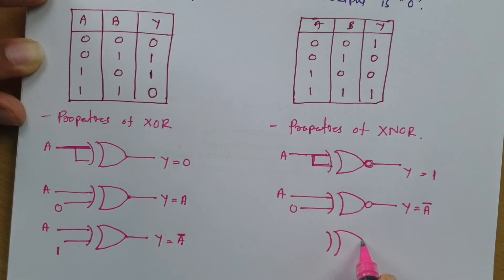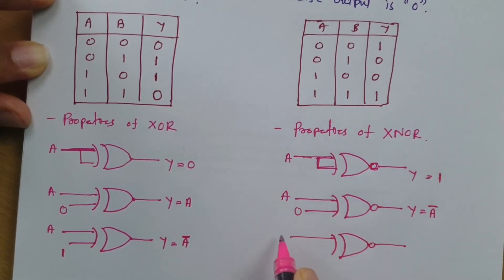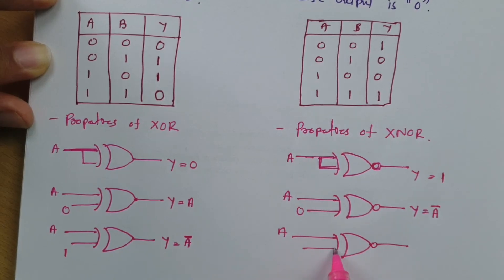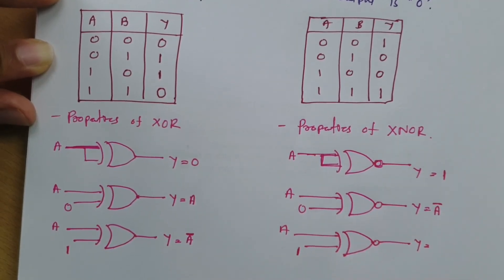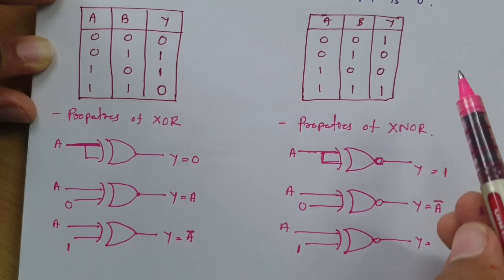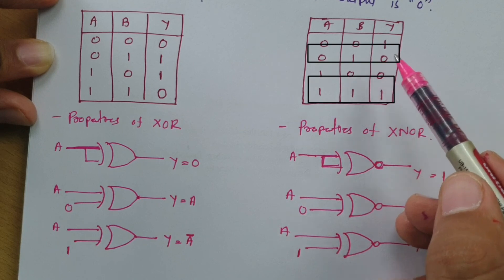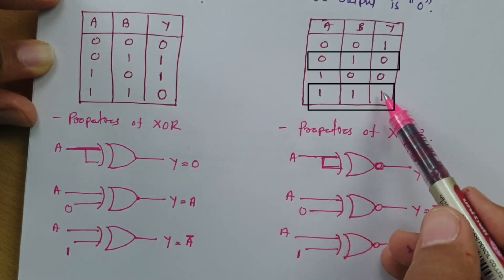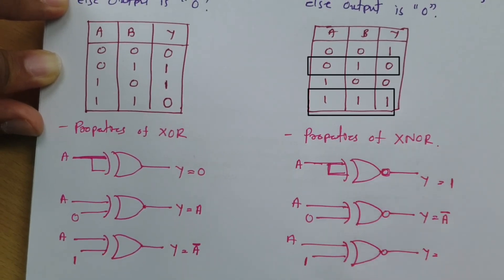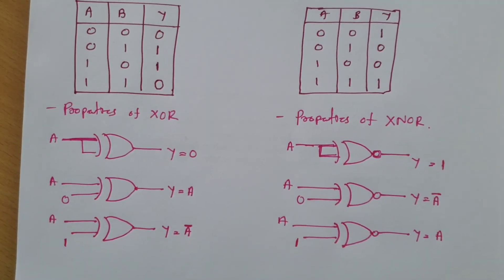Third property of XNOR gate: if one terminal is A and the second terminal is 1, then when A is 0 output is 0, and when A is 1 output is 1 — so the output is A. These are the properties of XOR and XNOR gates.